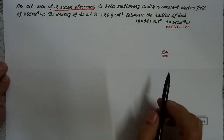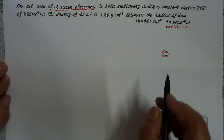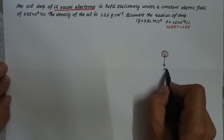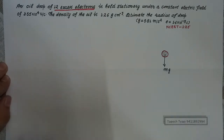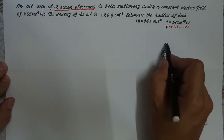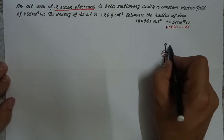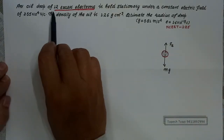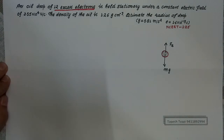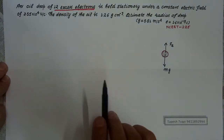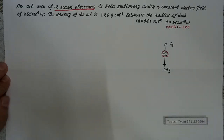So, if this oil drop is in stationary condition, then its weight will be acting in the downward direction, and an equivalent electrostatic force will act on this oil drop in the upward direction. That is the electrostatic force, Fe. Now the question states that this oil drop has 12 excess electrons.